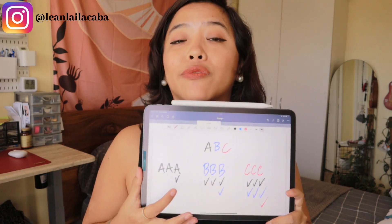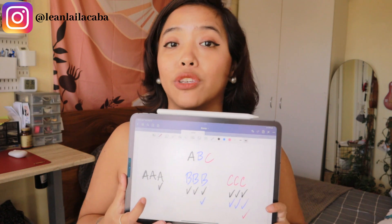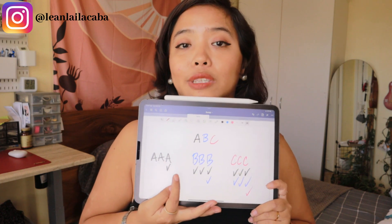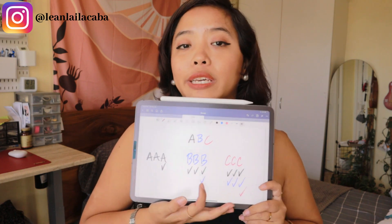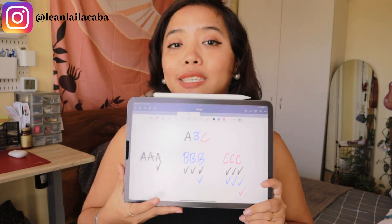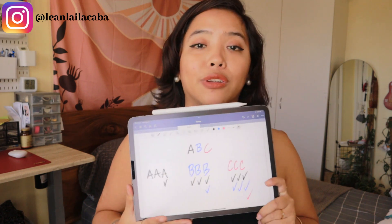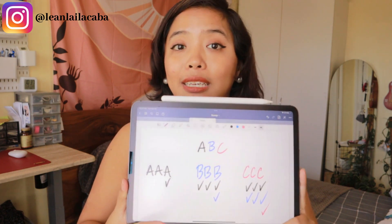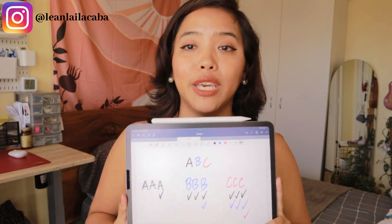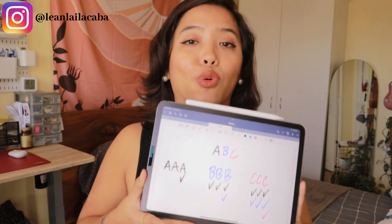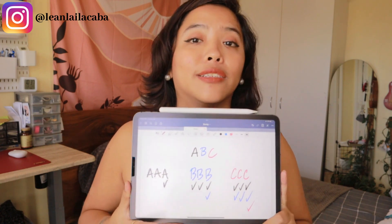But if you focus on finishing A first, you start getting the benefits of A right away — it doesn't have to be monetary, it could be a new system you created. Then while you're doing B, you're already experiencing the benefits of A. By the second week you've finished B, and when you start C you have the benefits of both A and B. The ABC method helps you stick to just one thing at a time, so tasks actually get done instead of staying in the backlog forever.